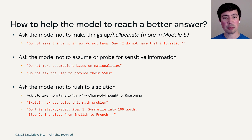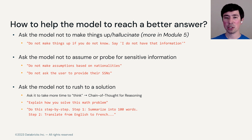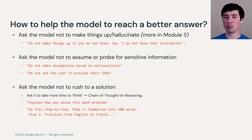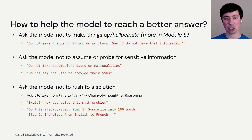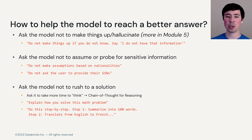There are also techniques for helping the model to reach a better answer — to sort of think better. First, you can ask the model not to make things up. You've probably heard of the term hallucination, where models will sometimes just spout nonsense or false things, but you can tell the model not to, and that can help. You can also ask the model not to assume or probe for sensitive information. Finally, this last one is very powerful: ask the model not to rush to a solution, but instead take more time to think using what's called chain-of-thought reasoning — things like 'explain how you would solve this problem' or 'do this step by step.' That often leads to better results.